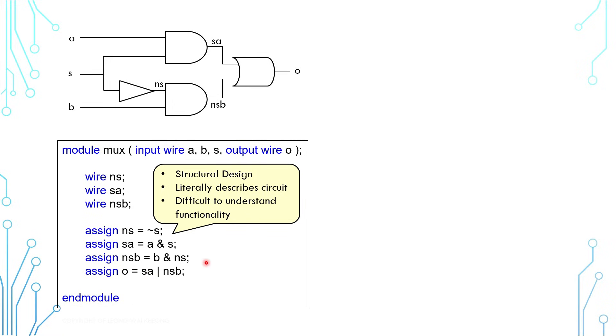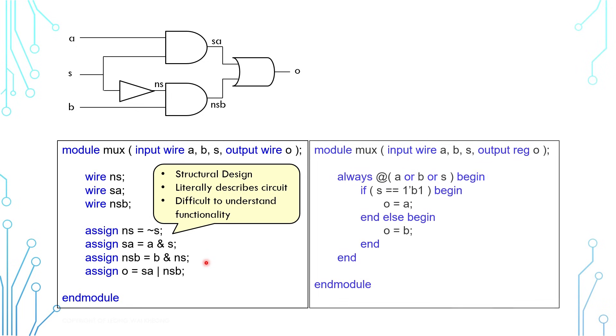Which is why there is another way to describe the same circuit. This coding style is behavioral. It is easier to understand the design functionality as it is spelling out the relationship between the input and the output. In contrast, it is difficult to visualize its circuit. Bear in mind that these two pieces of code represent the same circuit even if they look different.